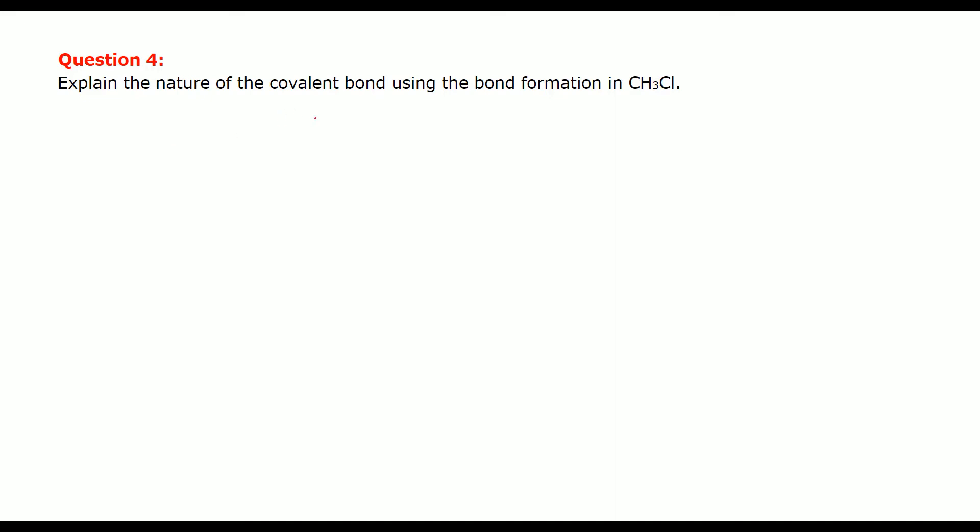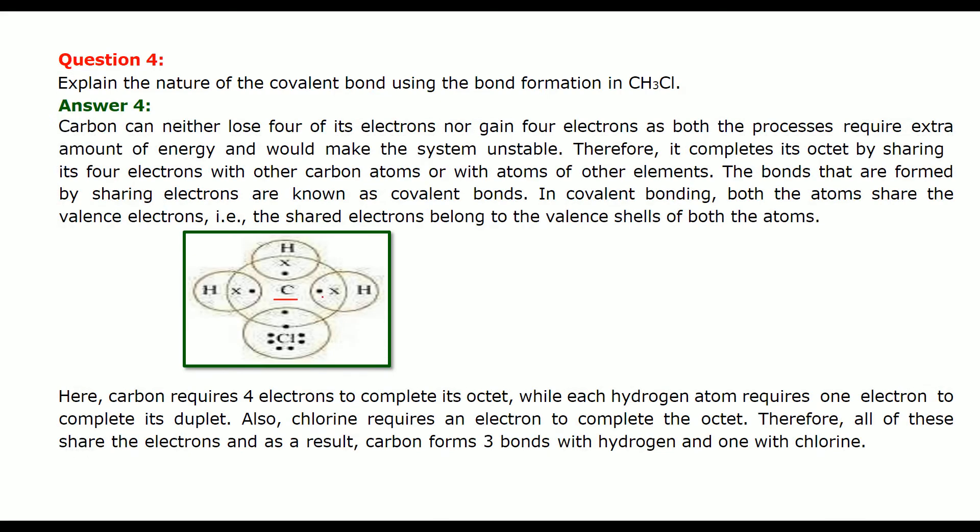Explain the nature of covalent bond using bond formation in CH3Cl. So this is C. We have H, H, H and Cl. So C has 4 outside, means it wants to combine all these 4. Hydrogen will combine with 3 and chlorine will combine with one of these. So carbon can neither lose 4 of its electrons nor gain 4 of its electrons as both the processes require extra energy and that is going to make this system unstable for carbon. In order to complete the octet, it completes by sharing 4 electrons with other carbon atom or it may be atoms from other element as we see here.